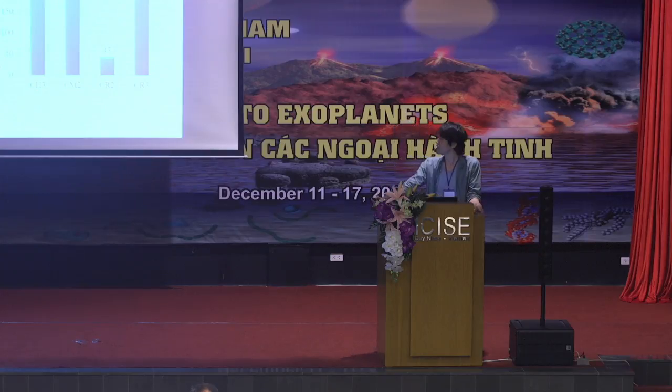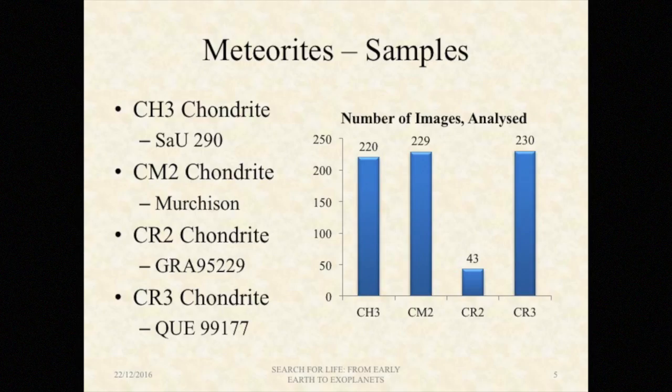Here is a list of species that we investigated: CH3 chondrites, CM2, and two CR chondrites. The bar graph on the right-hand side represents how many images we took for each species.